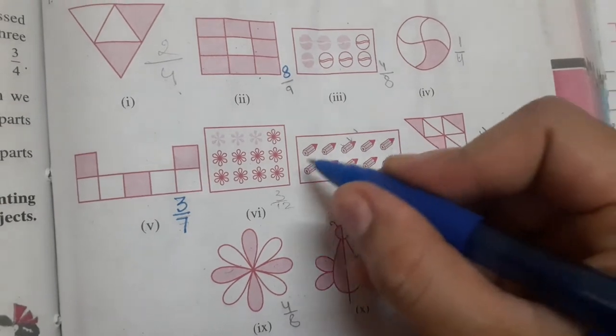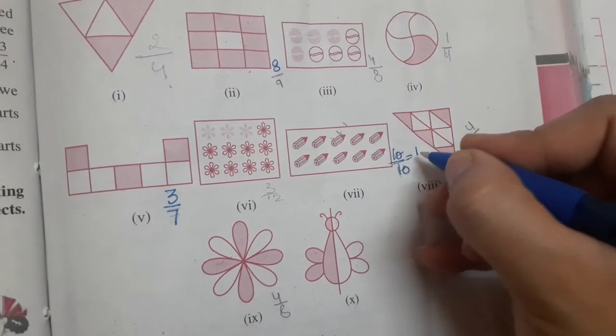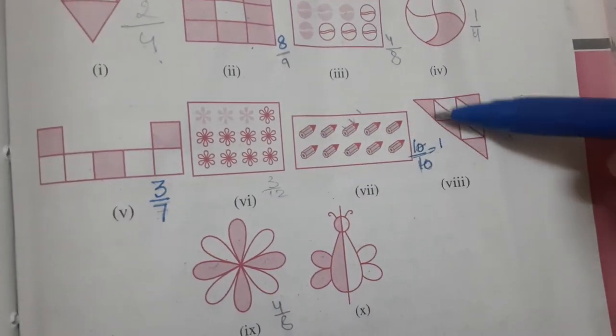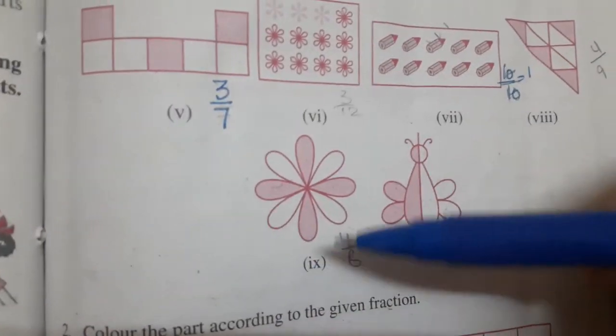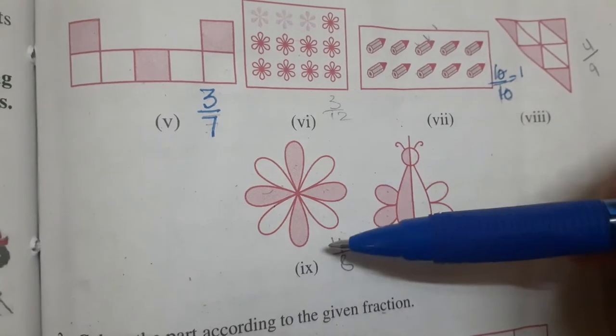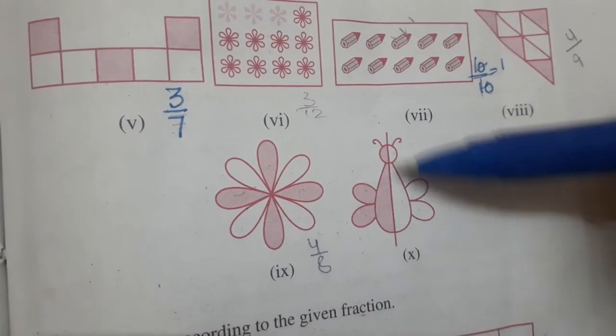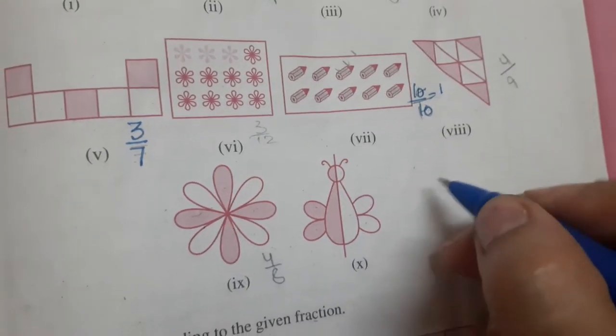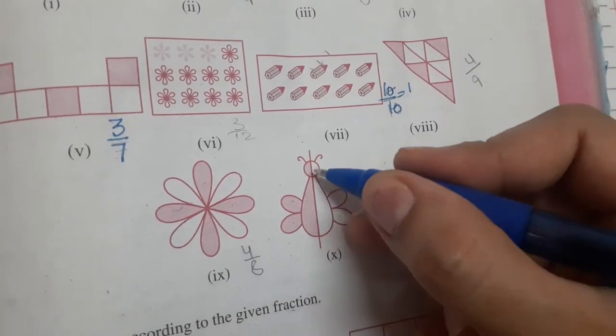Now all these pencils are shaded, so the fraction of this is 10 by 10. That means the whole part is shaded. When I cut this, I will get 1, that means 1 whole part. Whole pencils are shaded. Now here, 4 parts are shaded out of 9, so 4 by 9. Here, 4 parts are shaded out of 8, so the fraction is 4 by 8. Here, this is an insect. Half of the insect is shaded. The fraction is 1 half, 1 part out of 2 parts are shaded, that is 1 by 2.